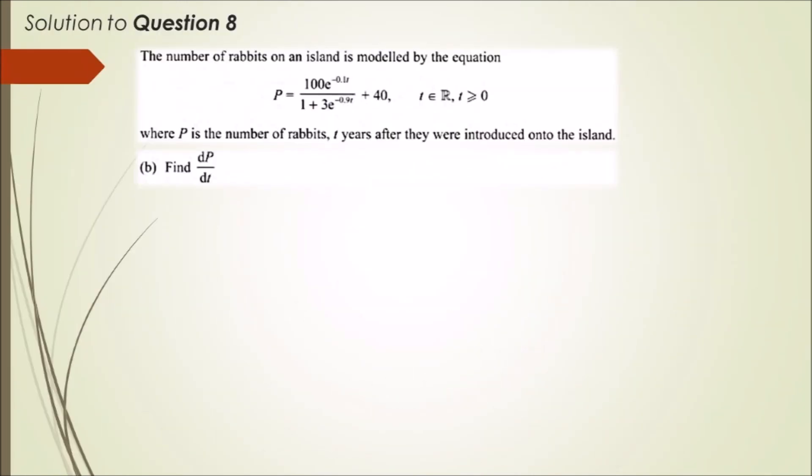Let's jump on to Part B. Here we'll be trying to figure out the derivative of P with respect to the time variable t using that given equation. How do we differentiate this? Ignoring 40 because we know the derivative of a constant is zero, we have a fractional equation, so we can use the quotient rule.